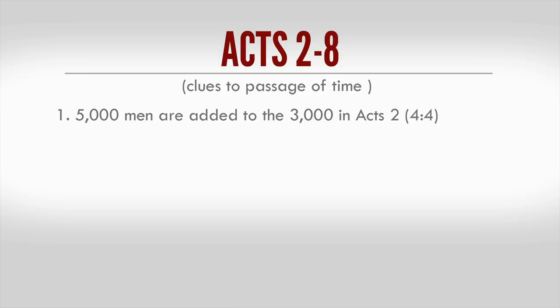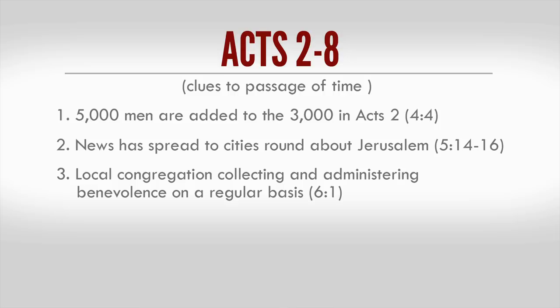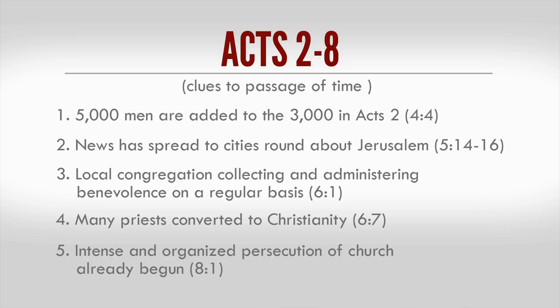Secondly, not only are even more souls, both men and women, added to the church by chapter 5, news has also spread enough to where multitudes out of the cities round about Jerusalem have flocked to Jerusalem, Acts 5:14-16. Thirdly, enough time has passed where the local Christians are collecting funds and distributing to those in need on a regular basis, Acts 6:1. Additionally, in chapter 6, enough time has passed to see many Jewish priests hear and obey the gospel, chapter 6:7. Finally, one of the greatest indicators that a sufficient amount of time has passed by chapter 8 is that intense persecution had already developed, chapter 8:1.